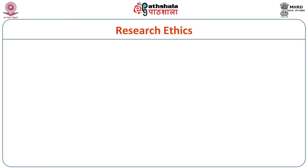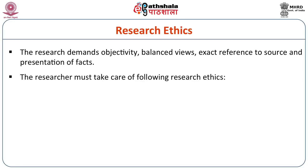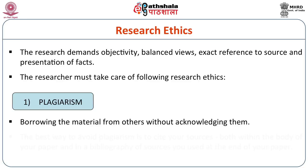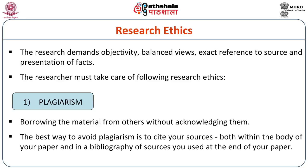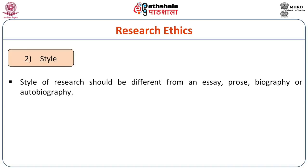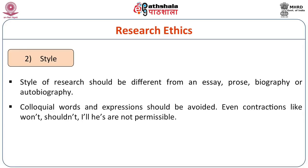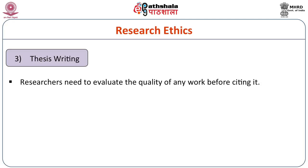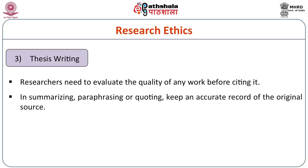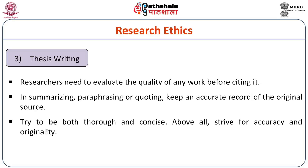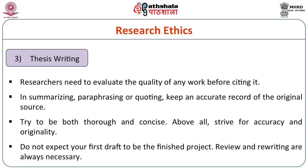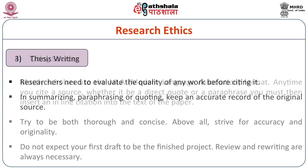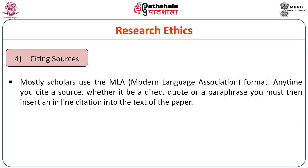There are some research ethics that should be followed. The first and foremost is plagiarism — borrowing material from others without acknowledging them. The best way to avoid plagiarism is to cite your sources both within the body of your paper and in the bibliography. A style of research should be different from an essay, prose, biography, or autobiography. Colloquial words and expressions should be avoided. Researchers need to evaluate the quality of any work before citing it. In summarizing, paraphrasing, or quoting, keep an accurate record of the original source. Try to be both thorough and concise. Above all, strive for accuracy and originality. Do not expect your first draft to be the last draft — review and rewriting are always necessary.